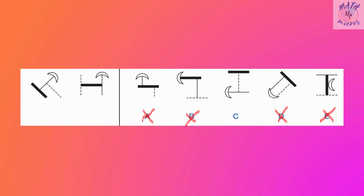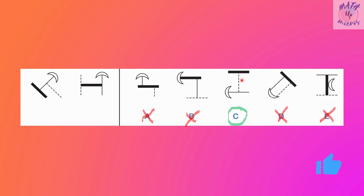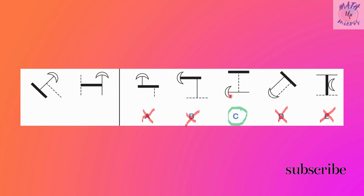So we are left with option C, and that's the answer — C is the answer. Let's check for the similarity. We have a solid black line and a dotted line, both of the same shape and size. And there is a thin line with the crescent in the middle, which is also present. So this is the similar figure with respect to the question, and C is the answer.